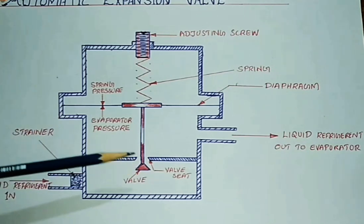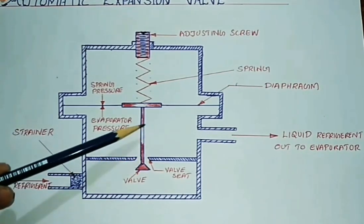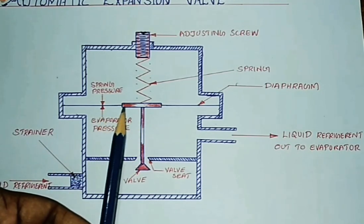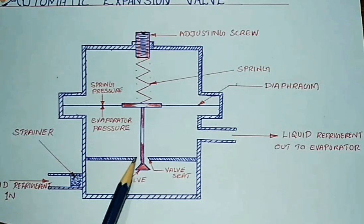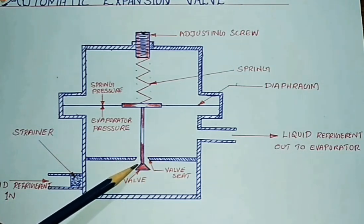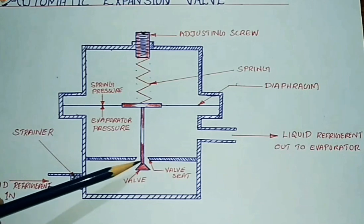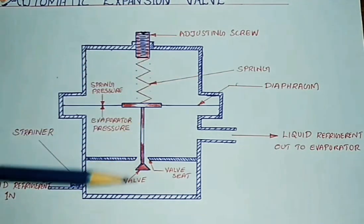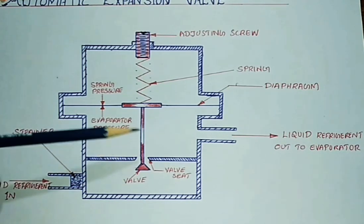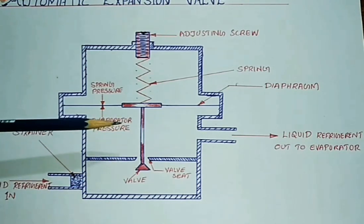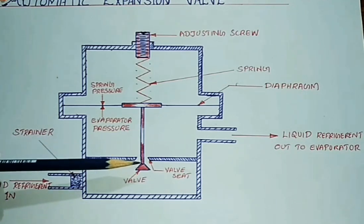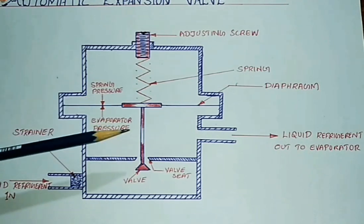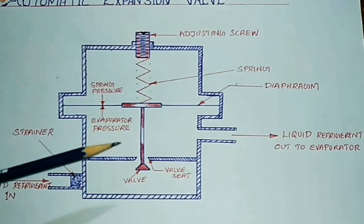Now we are going to load the system. This is the evaporator pressure. When the evaporator pressure drops, the diaphragm will open the valve, allowing liquid refrigerant to flow. Then the valve will reach the set pressure and stop.